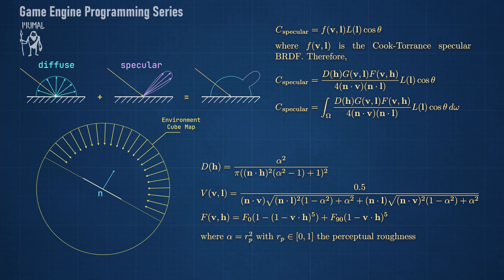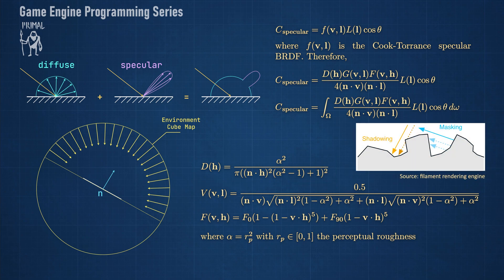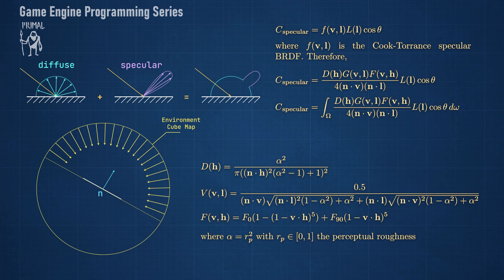The G function is the masking shadowing term also known as the geometric function. It calculates how much of the incoming and reflected light is blocked by micro-facets. In our implementation we chose a variant of this function that combines these terms and also takes the height of the micro-facets into account.